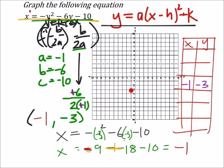I can move out from the vertex, choosing y-values like negative two, negative one, negative four, negative five. For y equals negative one: negative one squared is one, but it's negated, so negative one, minus six times negative one is plus six, minus ten gives negative five. So my next point is at negative five, negative one.